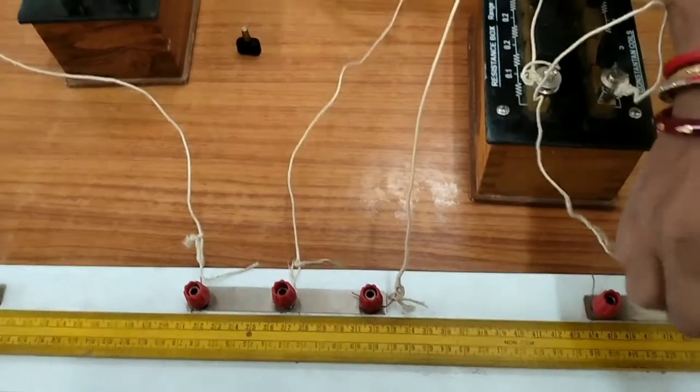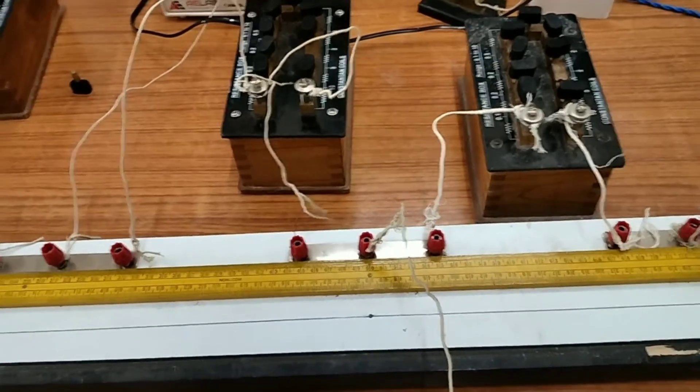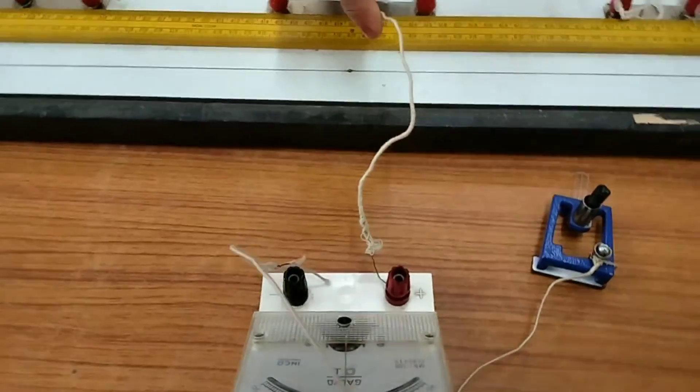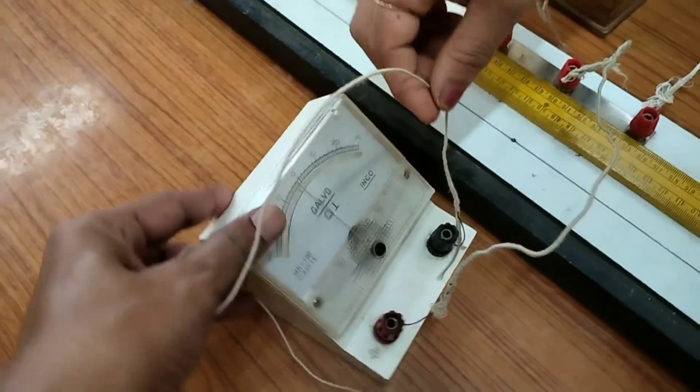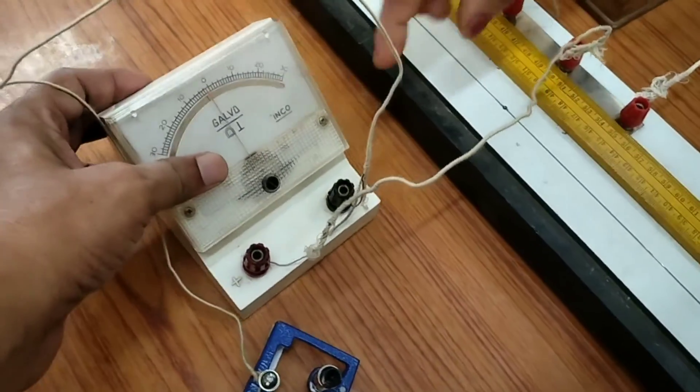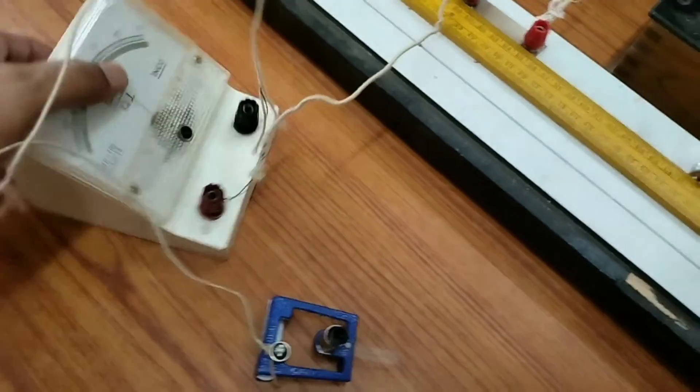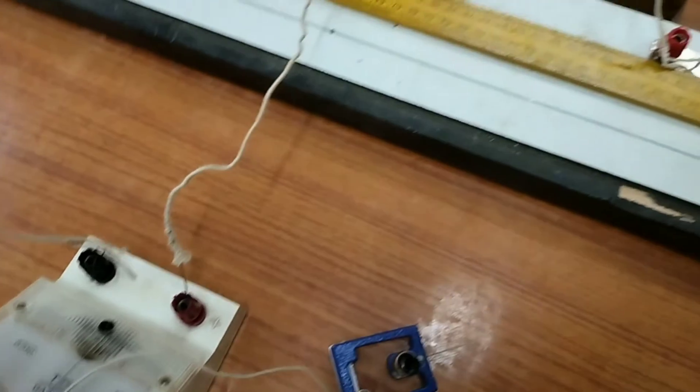And you also connect a galvanometer - this is one end of the galvanometer. And you connect the other end of the galvanometer to this jockey. You see, this end of the galvanometer I have connected to the jockey.